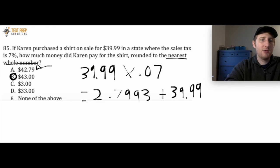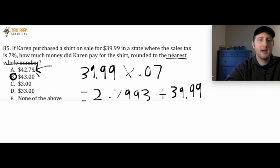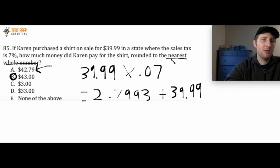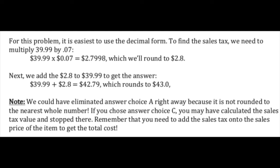If you got A, I would still say you got this question right because you figured out how to get the answer — it's just a little nuance since it's asking you to round to the nearest whole number. So technically B is correct, but if you got A, I'm happy with that. Here's the written solution — I'll put this up on the screen, pause the video, take all the time you need, and we'll go on when you're ready.